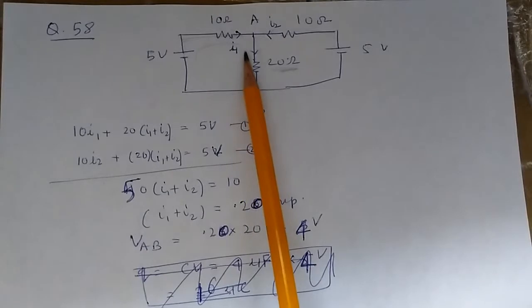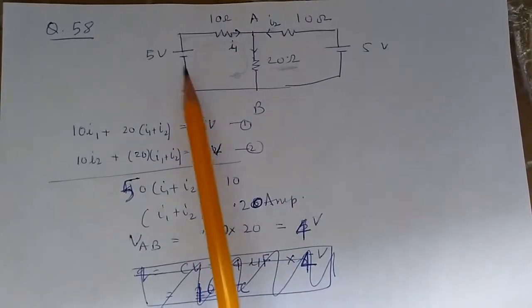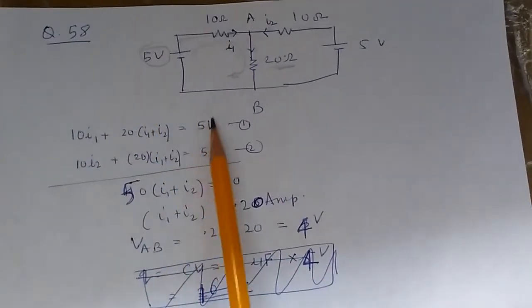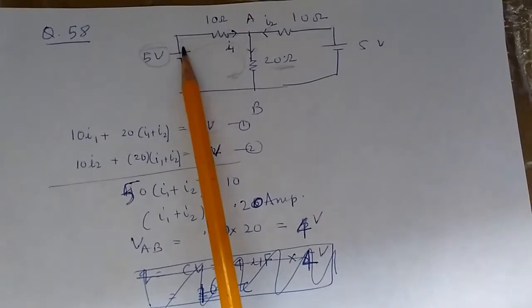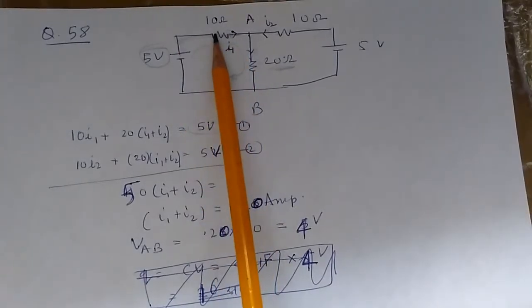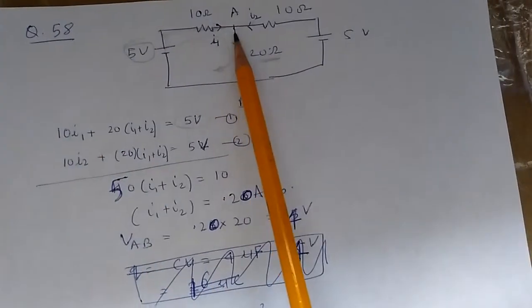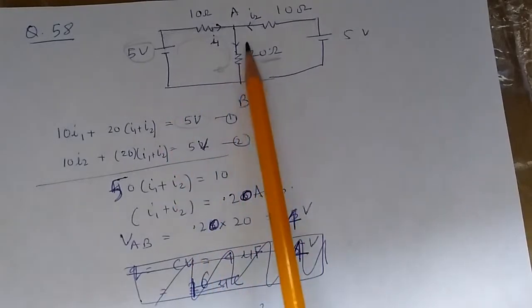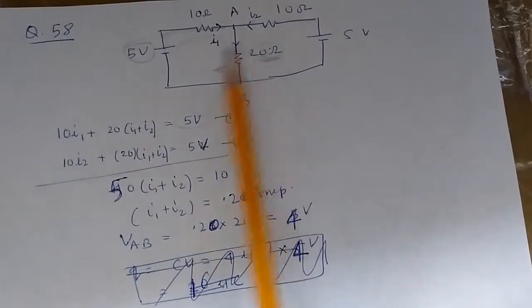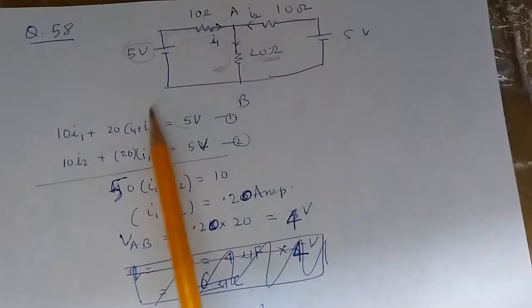If we apply Kirchhoff's law in this loop, we get the 5 volt power supply and then an IR drop of 20 times I1 plus I2.